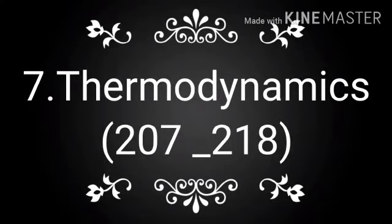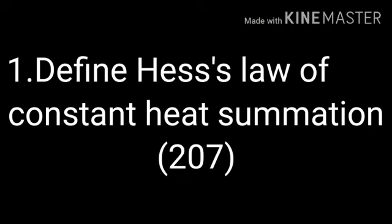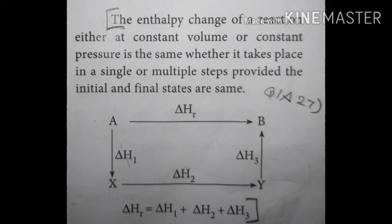We learned the 7th lesson, Thermodynamics, page number from 207 to 218. Within this page number, the following book questions and answers are included. Question 1: Define Hess's law of constant heat summation. Refer to book page number 207, right side.